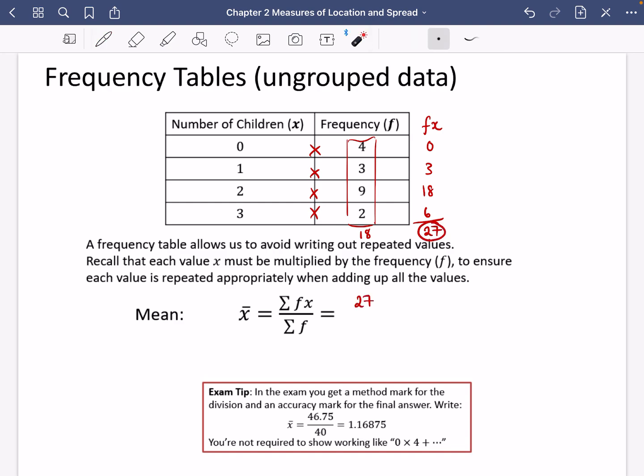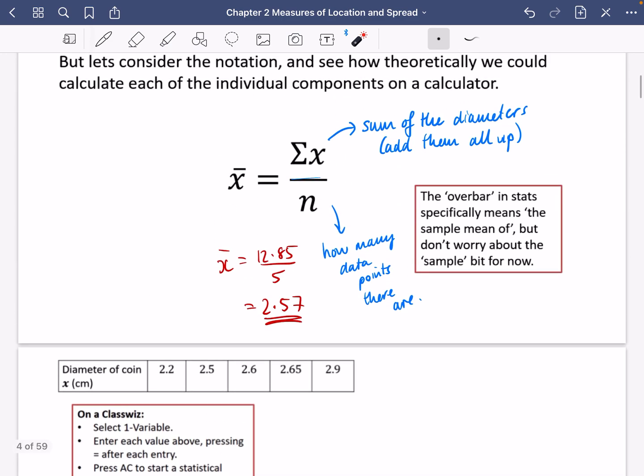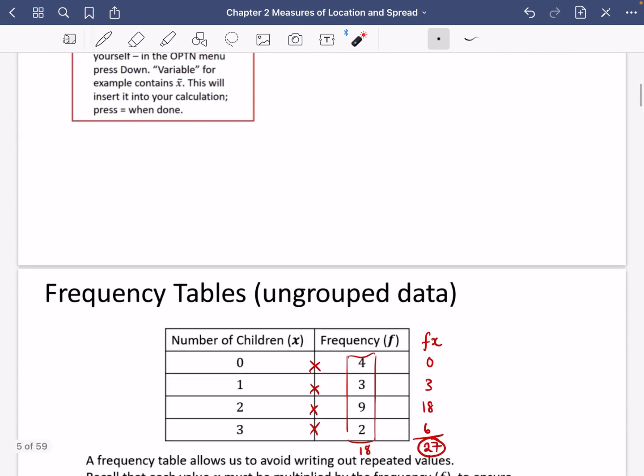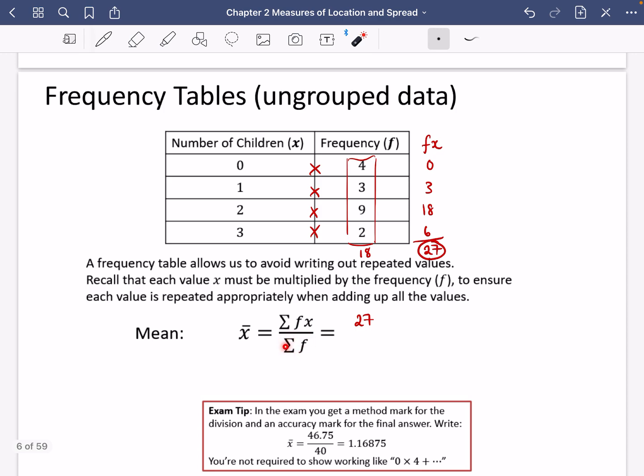This bit previously was how many things there were, it was n, but it's changed. And it's now just saying add up the frequencies, in other words, how many families there are. And it adds up to 18.